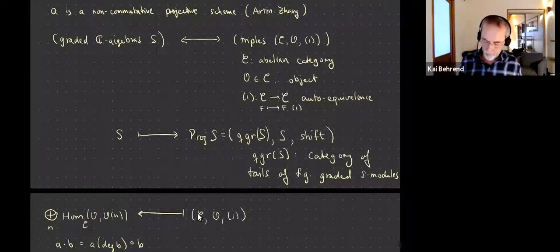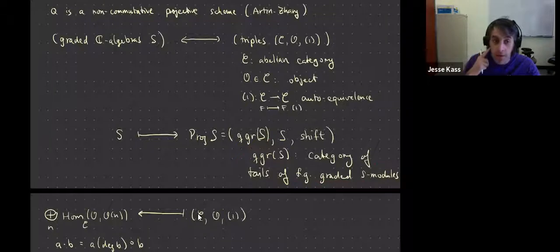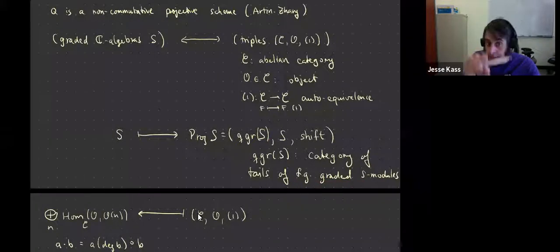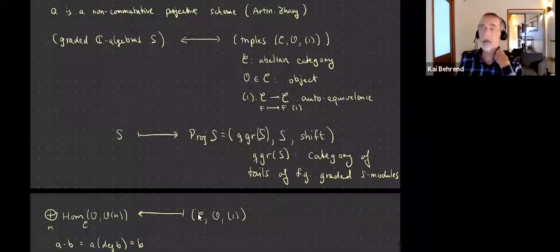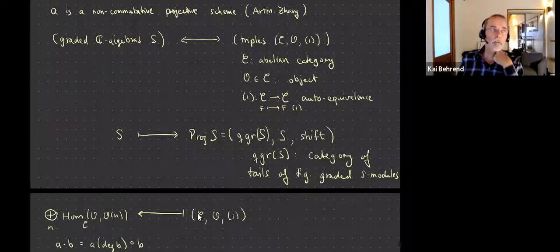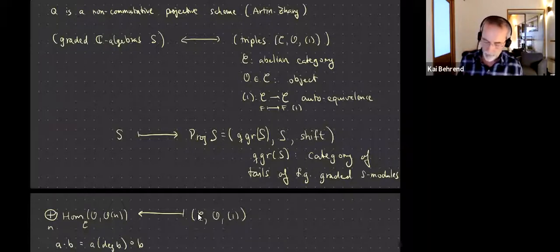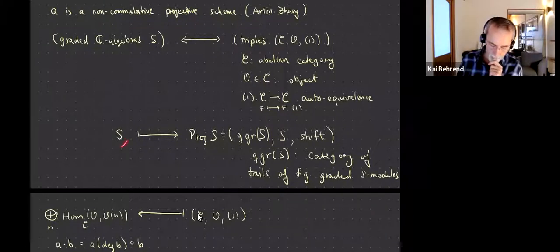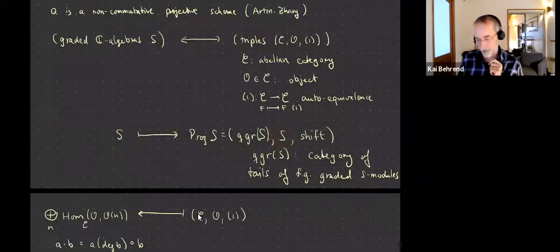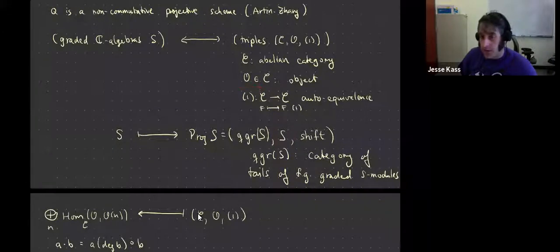The main thing is we associate the abelian category, which is the analog of the category of coherent sheaves on a projective scheme. You take the finitely generated graded modules and say two of them are equal if they differ only in finitely many degrees — that defines this category. In the commutative case, S itself defines the structure sheaf, and the auto-equivalence is tensoring with O(1). That's exactly right.